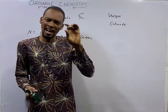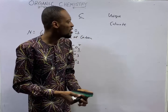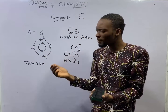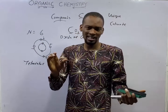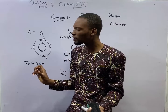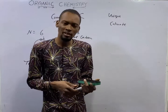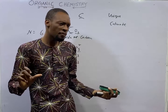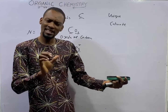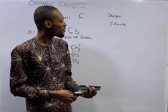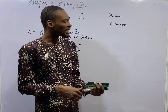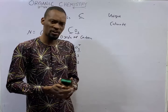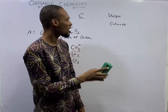Number two is hybridization. Hybridization is the mixing of orbitals to form orbitals of equivalent energy. Remember, under quantum numbers we did a lot and said a lot about orbitals. It is as a result of hybridization that carbon becomes tetravalent. We shall see compounds and their hybridization as we progress.